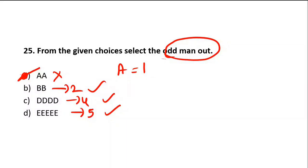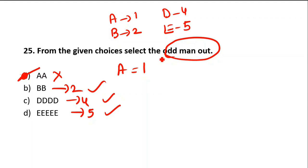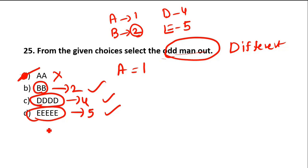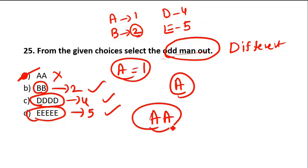Those who gave other answers — are you clear now? Alphabetical value of A is 1, B is 2, D is 4, E is 5. The pattern is: each letter appears a number of times equal to its alphabetical value. B is 2 — given 2 times. D is 4 — given 4 times. E is 5 — given 5 times. A is 1 but is given 2 times — that is the odd one. Answer is Option A.